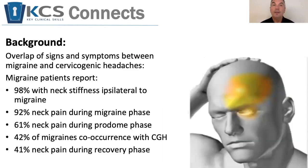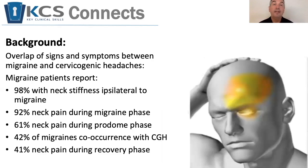There is a lot of overlap between cervicogenic headache and migraine. For instance, they both tend to be unilateral in their presentation. Along with that, migraine patients report neck stiffness on the same side as their headache, neck pain during the migraine phase and during the prodrome phase. Often, migraines tend to co-occur with cervicogenic headache, and there tends to be neck pain during the recovery phase of migraines as well.